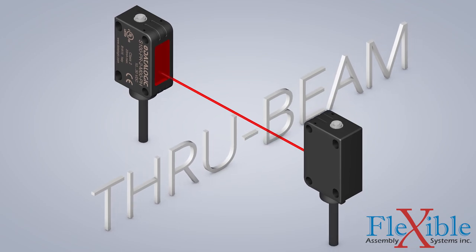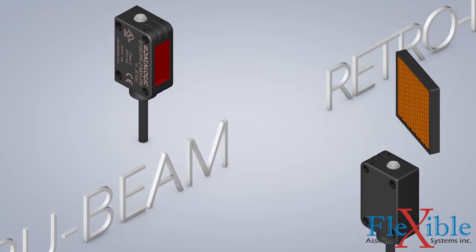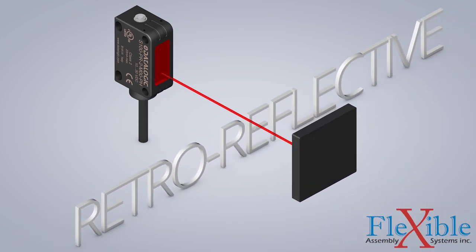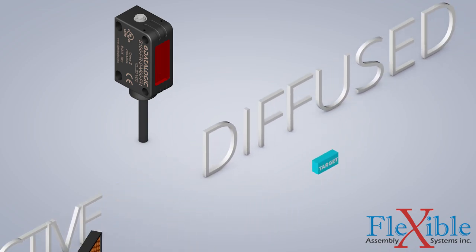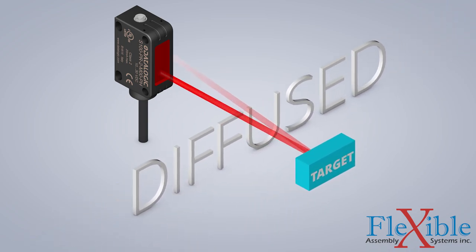In part 1 and 2 of this series, we examined through-beam and retro-reflective sensors, both which are long-range photoelectric sensor types. Today we will be looking at their shorter-range cousin, the diffused photoelectric sensor.